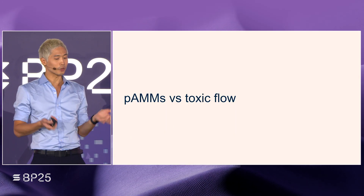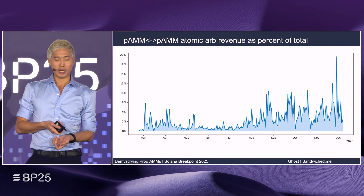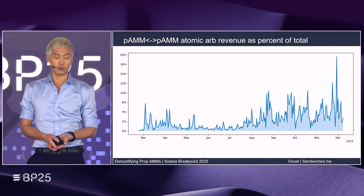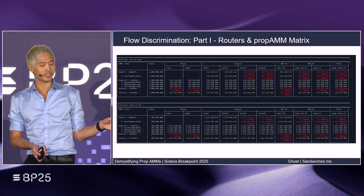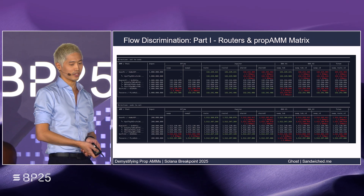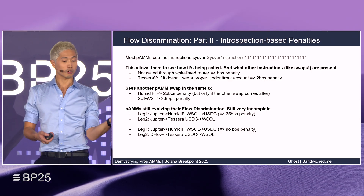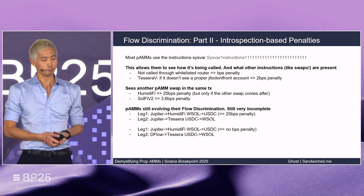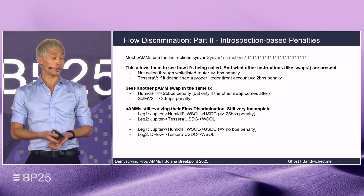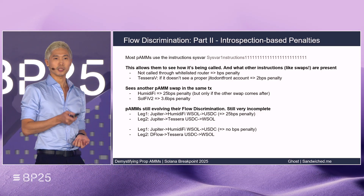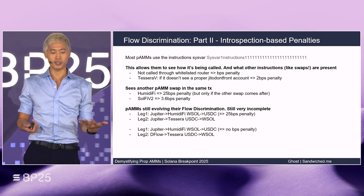Now let's talk about Prop AMs and toxic flow. When we look at atomic arbitrage ops that exclusively touch Prop AMs, they account for 5% to 10% of atomic ARB revenue. Reacting to toxic flow is one of the top priorities for Prop AMs. Some Prop AMs actually give a different output depending on which aggregator program and method invokes the swap. Many Prop AMs use the transaction's instruction data to inspect the full transaction — who calls them, what other swaps are present, and their ordering. If not called by a whitelisted router, they apply a PPM penalty. Tessera V applies about a 2 BPS penalty for a missing proper router. If another Prop AM swap is in the same transaction, one protocol may add 25 BPS. And another protocol applies 3.6 BPS. This is an evolving cat-and-mouse cycle.